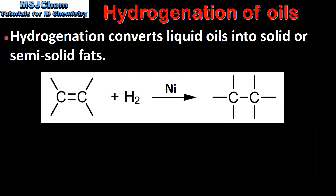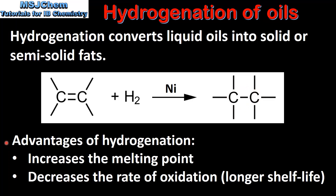Next we look at hydrogenation. Hydrogenation converts liquid oils into solid or semi-solid fats. In hydrogenation, hydrogen is added to a carbon to carbon double bond. The reaction takes place at high pressure in the presence of a nickel catalyst, and the product is a saturated fatty acid with carbon to carbon single bonds. The advantages of hydrogenation are that it increases the melting point and decreases the rate of oxidation, which means a longer shelf life.